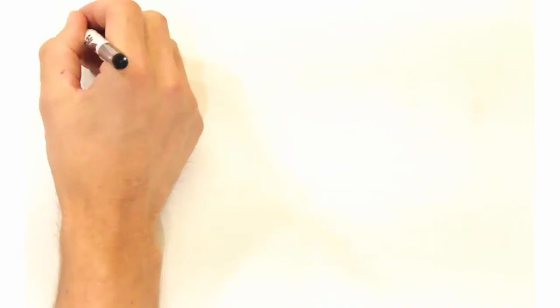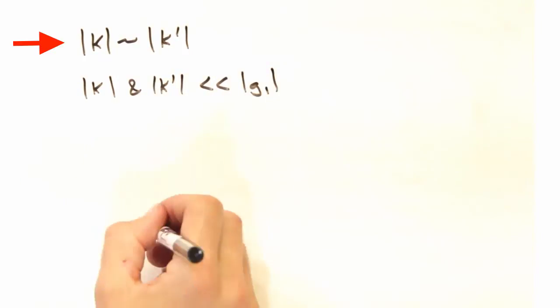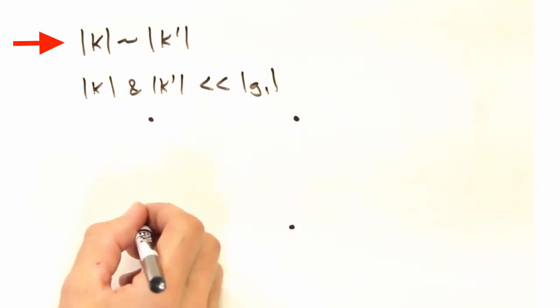So this isn't always going to be the case, but for visible light, we're basically going to invoke that the magnitude of k prime is close enough to the magnitude of k that we're going to treat it as equal when we do our vector diagrams.